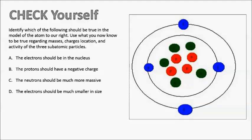Take a moment. When I'm going to read it aloud, you read it through as well. Identify which of the following should be true in the model of the atom to our right. Use what you now know to be true regarding masses, charges, location, and activity of the three subatomic particles. Is it A, the electron should be in the nucleus? B, the proton should have a negative charge? C, the neutron should be much more massive? Or D, the electron should be much smaller in size?